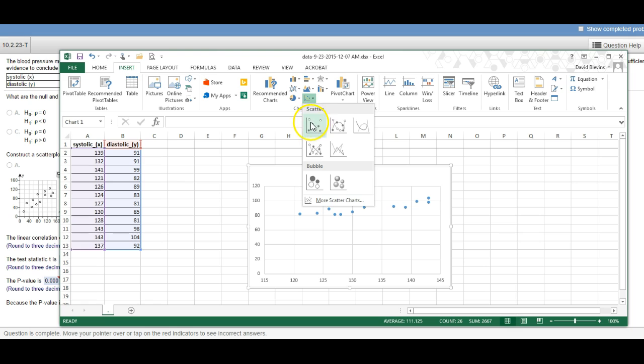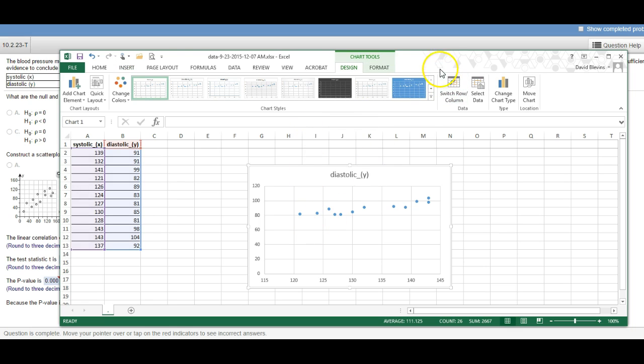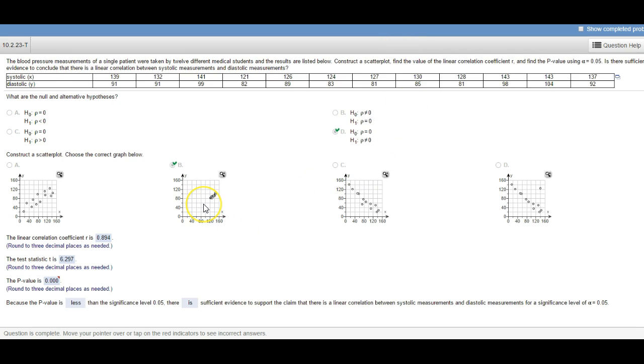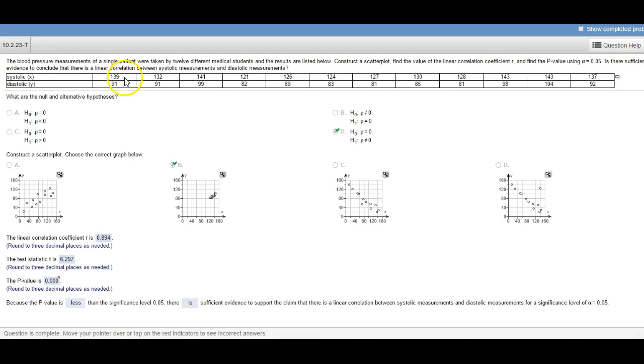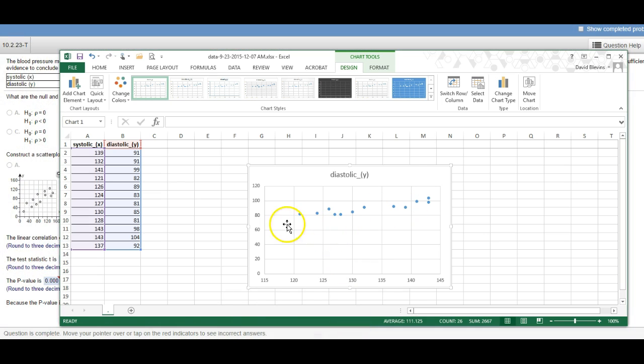Then go up to insert and then right here this is scatter plot, and just choose the scatter plot option. So there's what it looks like and you can kind of match graphs with that one. Okay, so that's the one that looks like all the data is right there between 120 and 145-ish, 150-ish on the x's.